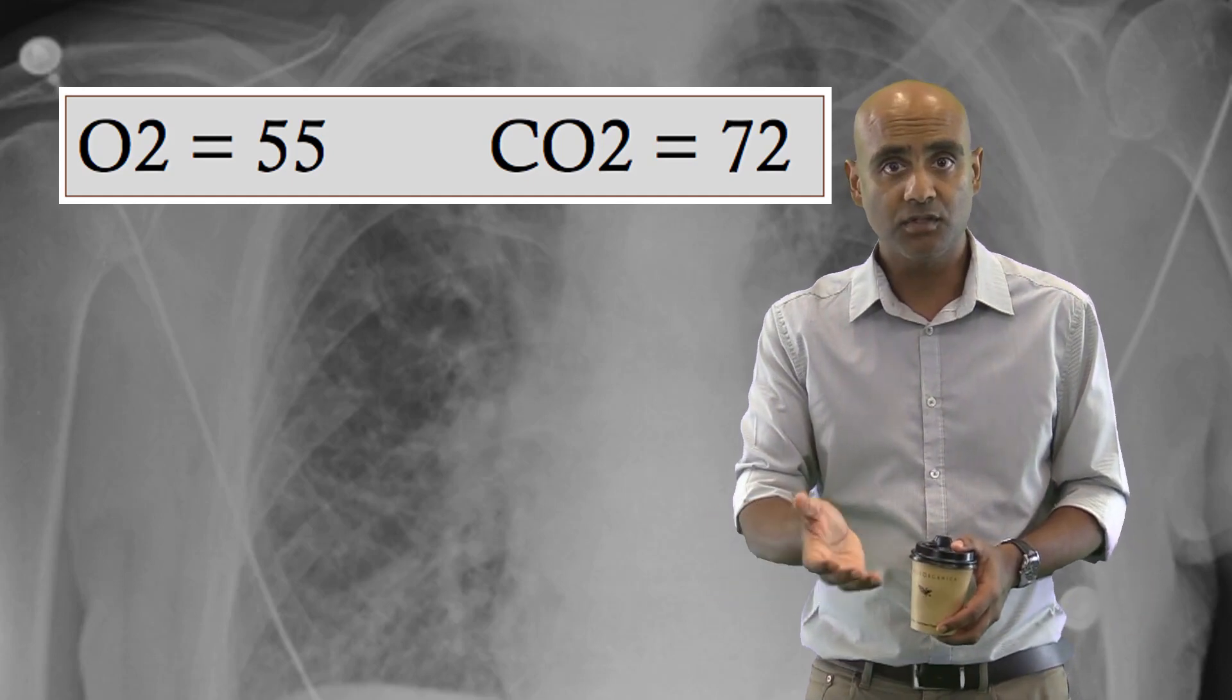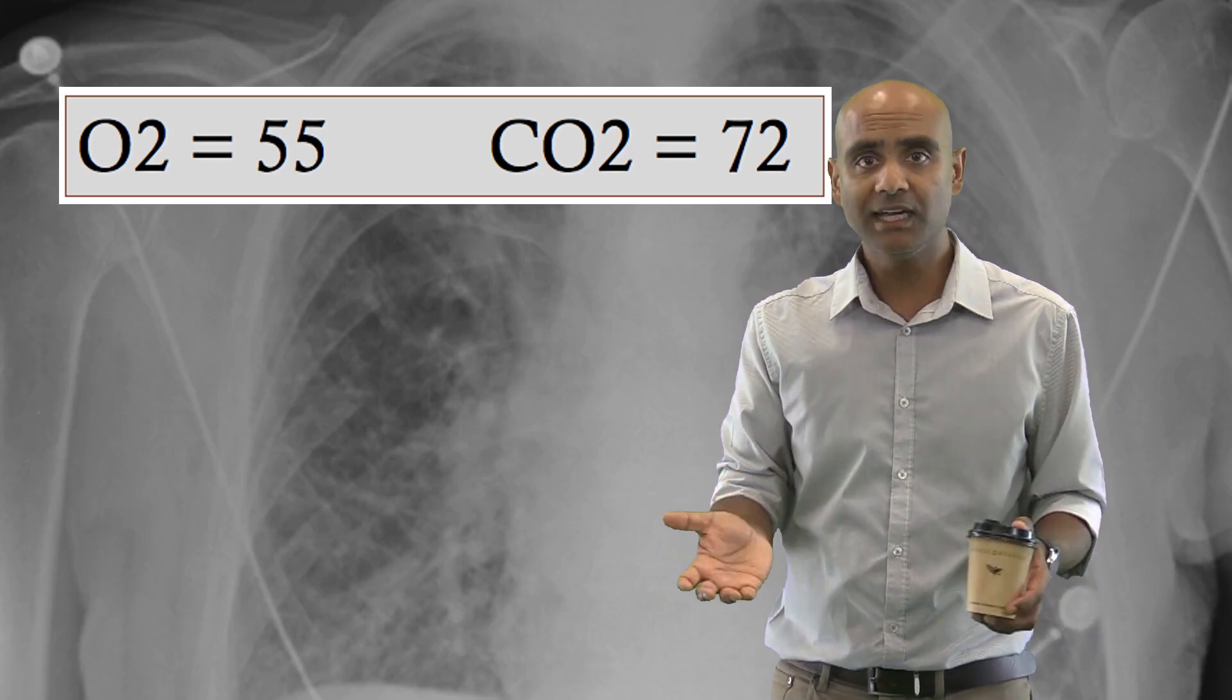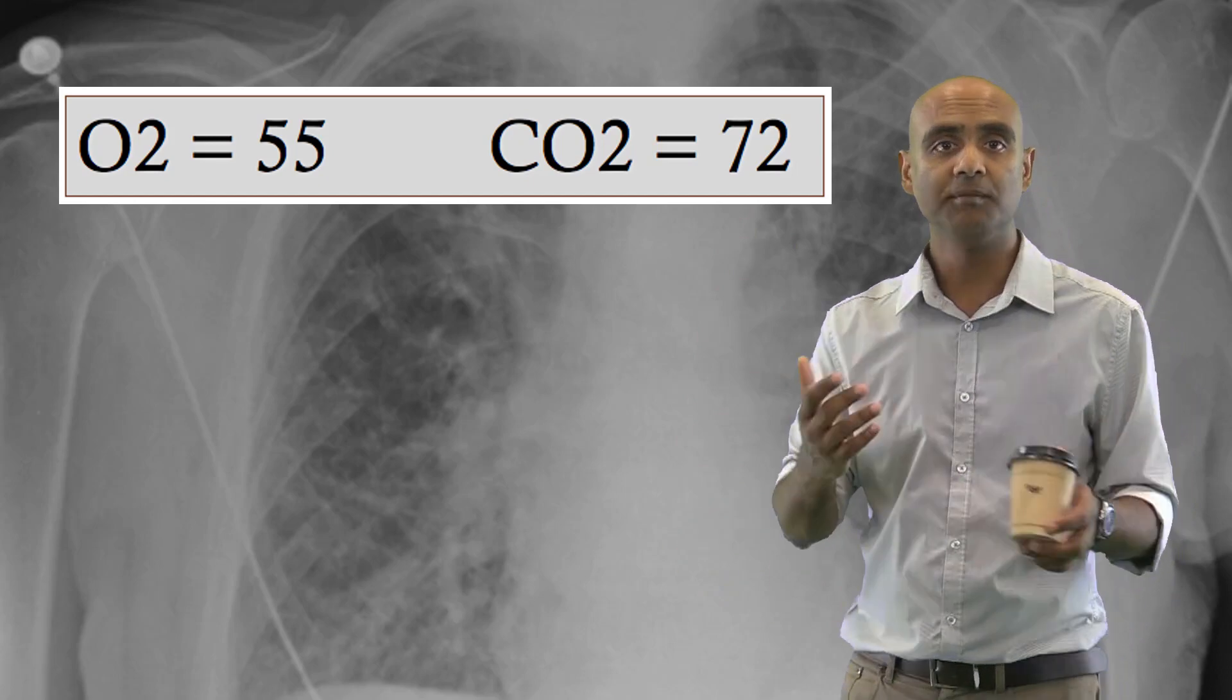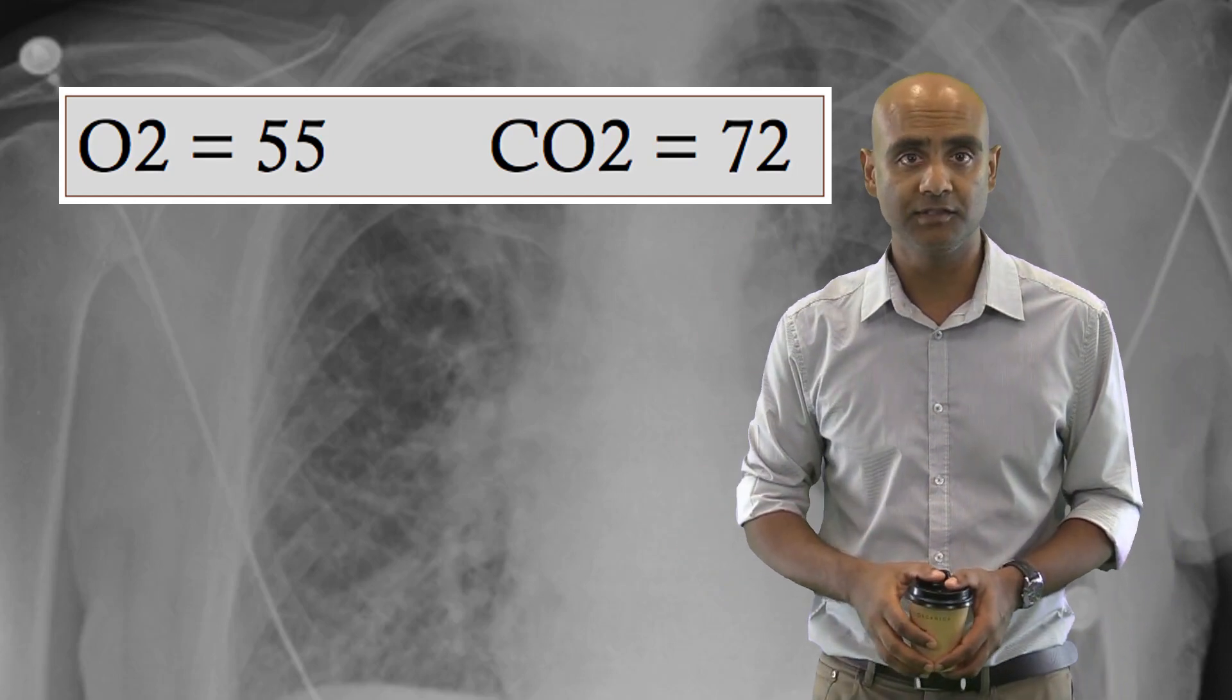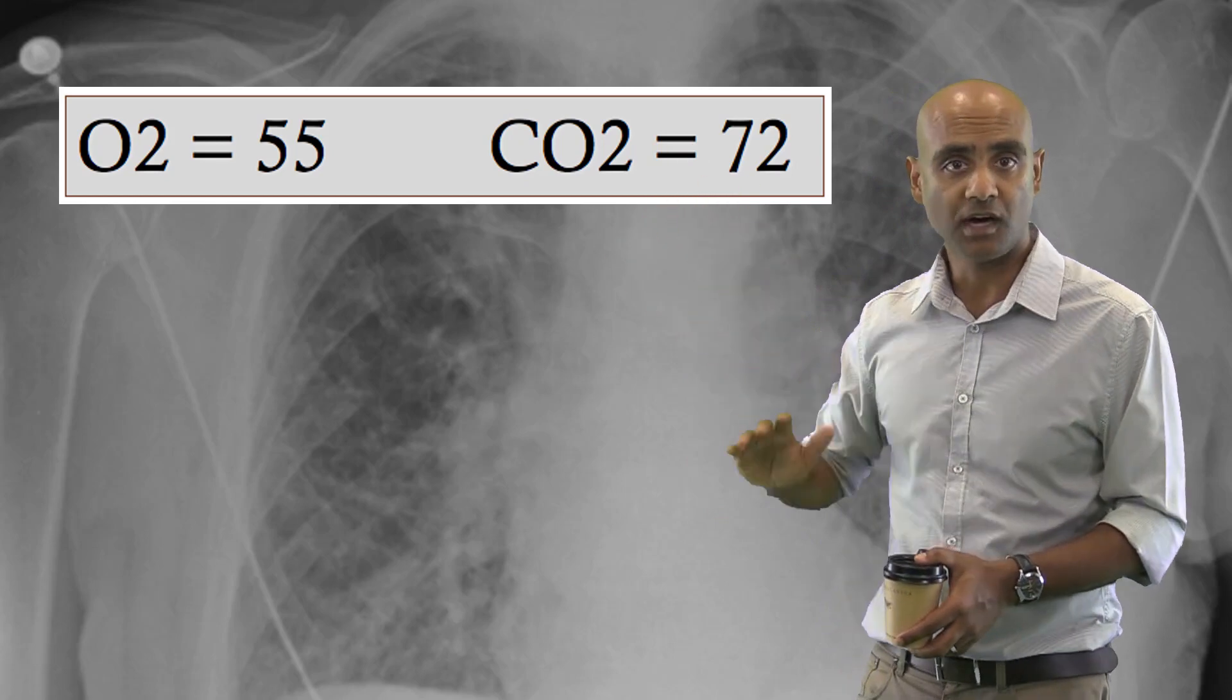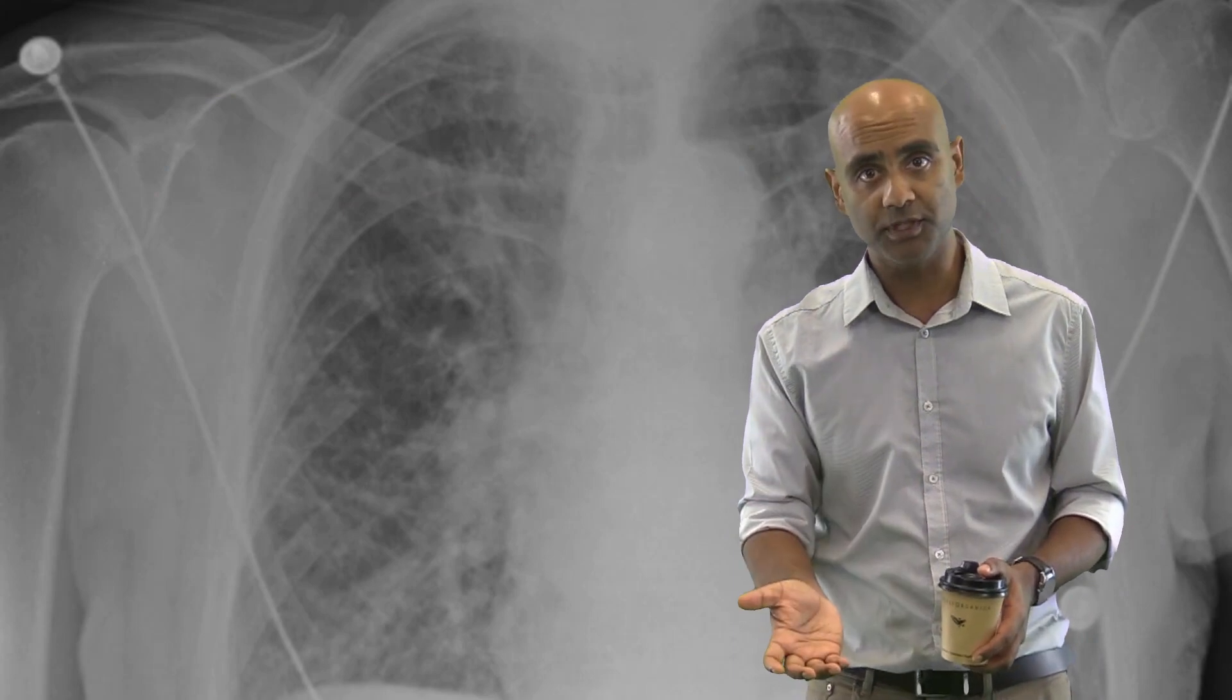Now potentially, you can also use venous blood gases, but there are many other variables to consider. So to keep this discussion simple, I'm just going to talk about arterial blood gases. So we now have a hypoxic as well as a hypercapnic problem. So changing him over to BiPAP seems appropriate.